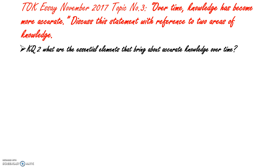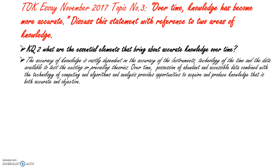Knowledge Question 2: What are the essential elements that bring about accurate knowledge over time? The accuracy of knowledge is vastly dependent on the accuracy of the instruments and technology of the time and the data available to existing or prevailing theories. Over time, possession of abundant and accessible data combined with computing technology, algorithms and analysis provides opportunities to acquire and produce knowledge that is both accurate and objective.